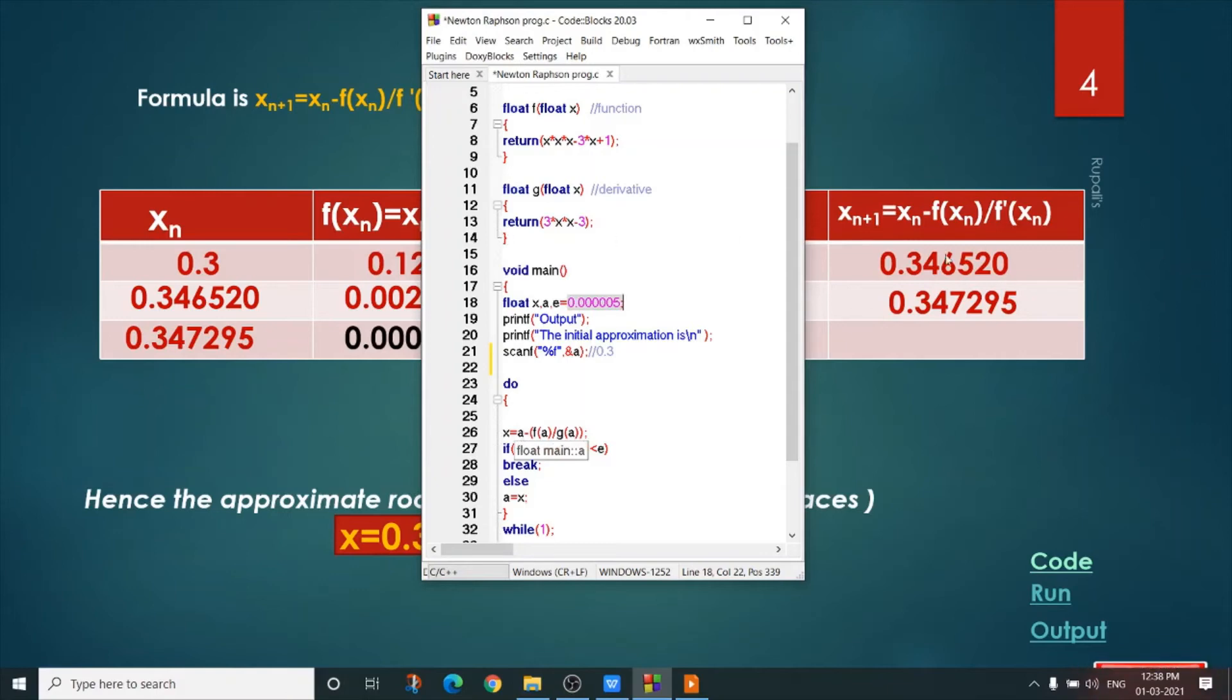Here it is x. And then, what you have to do? Here you have to give in place of xₙ, here you have to give xₙ₊₁ value. So here I am writing a = x.